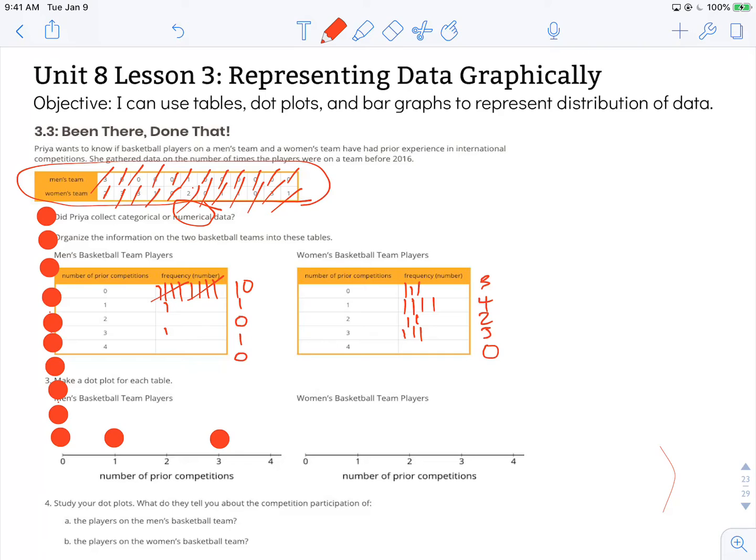For the women's basketball, we have three zeros. One, two, three. And four ones. One, two, three, four. Two twos. One, two. And three threes. One, two, three.